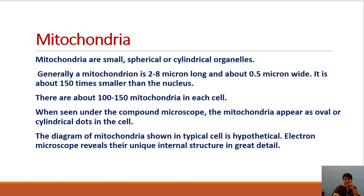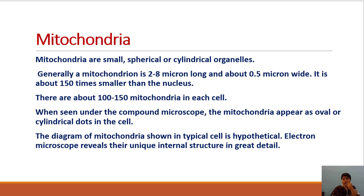Interesting facts about mitochondria: the shape is spherical, cylindrical, or oval. They are very small — the internal structure can only be seen under an electron microscope. The length of mitochondria is 2 to 8 microns and the width is 0.5 microns, meaning mitochondria are 150 times smaller than the nucleus. There are about 100 to 150 mitochondria in each cell. Under a compound microscope they appear as oval or cylindrical dots.